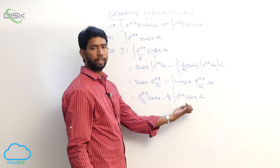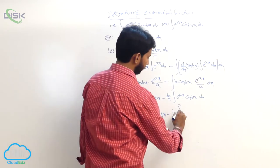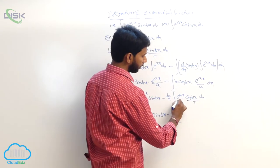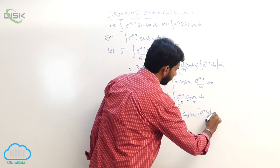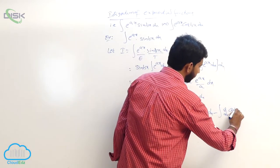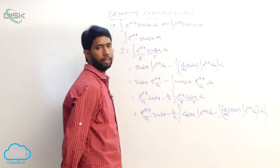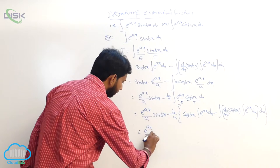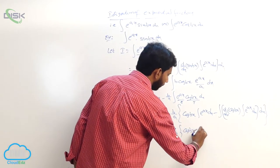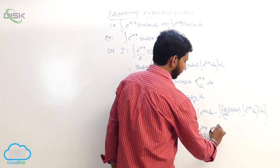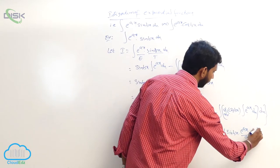Again apply by parts for the second integral, with cos bx as trigonometry function and e power ax as exponential function: cos bx into integral of e power ax dx minus integral of d by dx of cos bx into integral of e power ax dx. This gives e power ax by a into sin bx minus b by a into cos bx into e power ax by a minus integral of minus b sin bx into e power ax by a dx.